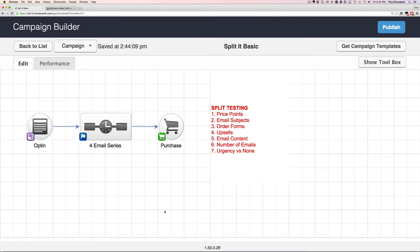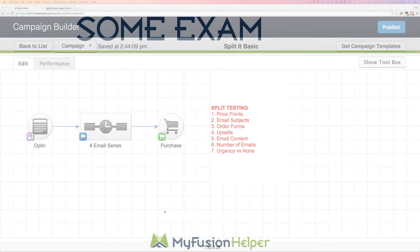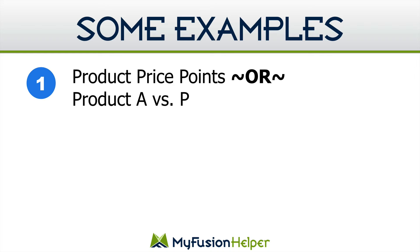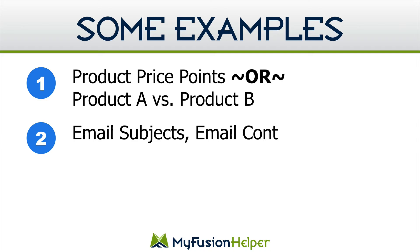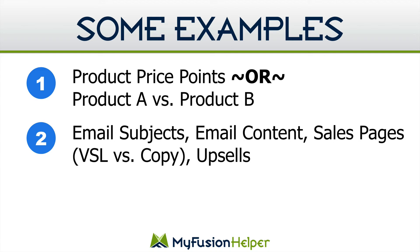So let's jump back into the training and wrap things up. Hopefully that gave you a few examples of things you could do. To summarize: we talked about testing product price points, or product A versus product B, testing email subjects and email content, and sales pages. You might want to send them the exact same email but with a different link that goes to a different sales page — one with a video sales letter and another with a traditional copywritten letter — to see which converts better.